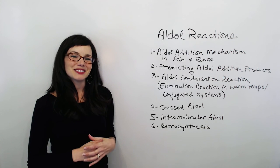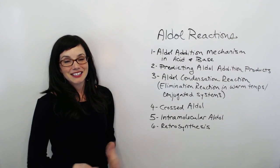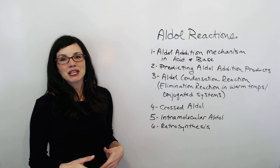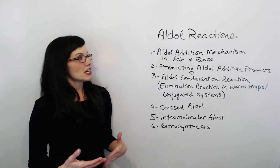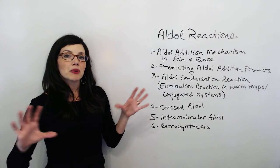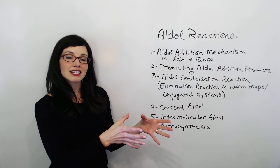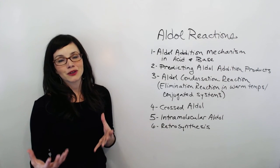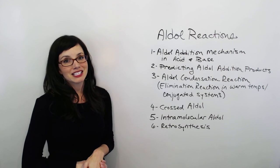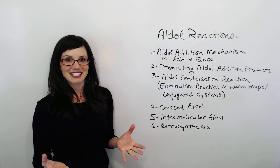I'm Jancie Despain with Bright Idea Tutoring. This is the last video in a six-part series, and if you've made it this far, congratulations. In this last video, I'm going to go over retrosynthesis — taking all the information from the first five videos and putting it all together to work backwards from a final product to find what ketone or aldehyde reactants made it. I hope you'll agree by the end that it's actually quite an easy process.